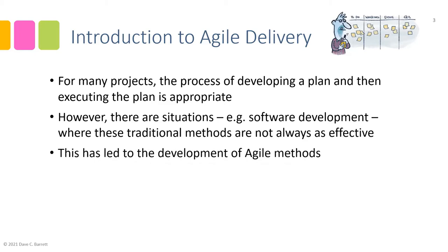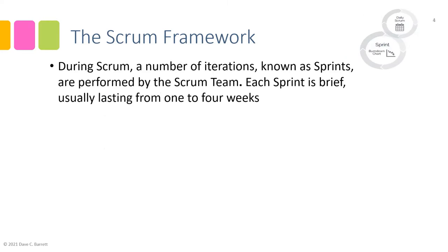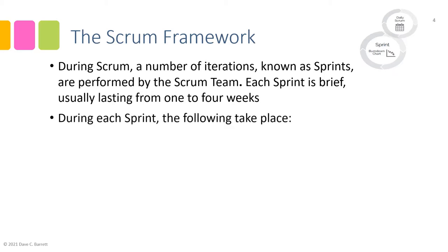This has led to the development of agile methods. Agile was born from the software development industry. While there are many agile frameworks, this course will focus on a very popular one called scrum. During scrum, a number of iterations known as sprints are performed by the scrum team. Each sprint is brief, usually lasting from one to four weeks, and within a project each sprint is a consistent duration of time — if it's one week, all sprints will be one week; if it's three weeks, all sprints will be three weeks.